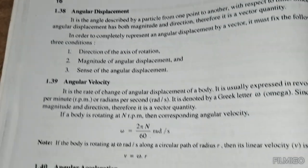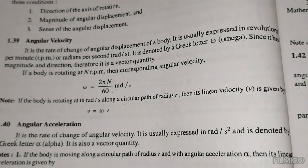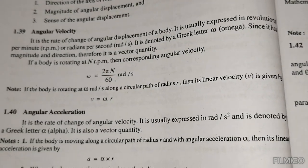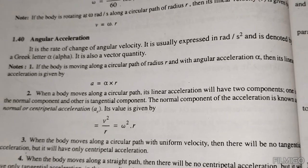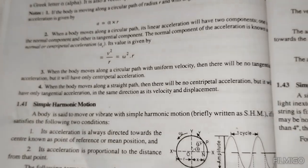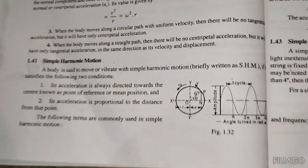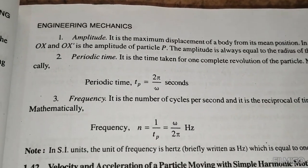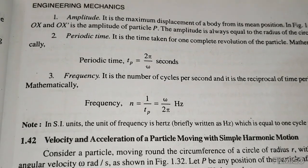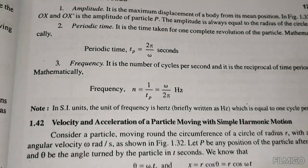Angular velocity omega equals 2 pi N divided by 60 radians per second. For a body rotating in a circle, linear velocity v equals omega times r. Centripetal acceleration a equals v squared divided by r, or omega squared times r. Angular acceleration alpha relates to linear acceleration as a equals alpha times r. Time period T equals 2 pi divided by omega; frequency n equals 1 divided by T, or omega divided by 2 pi, in Hz.